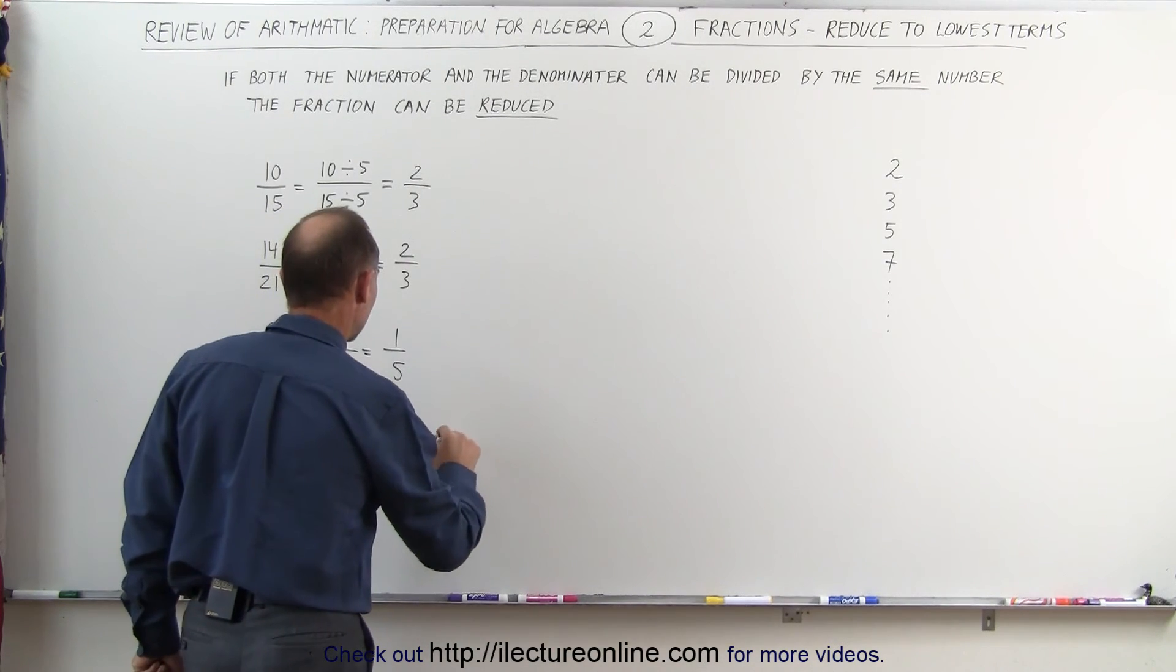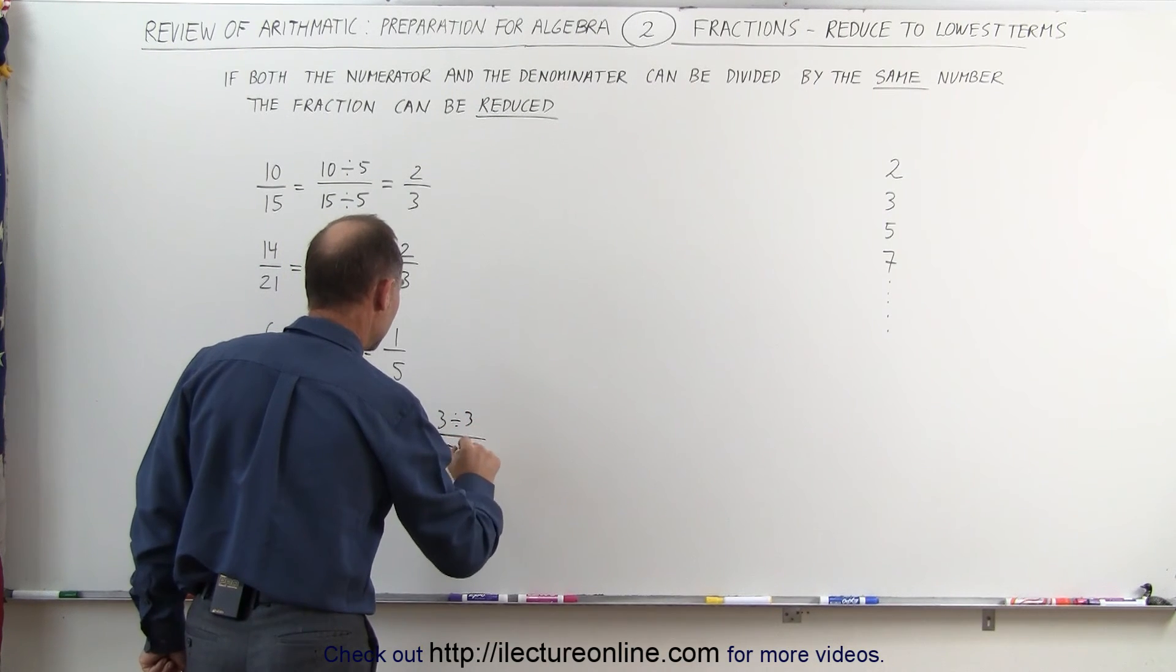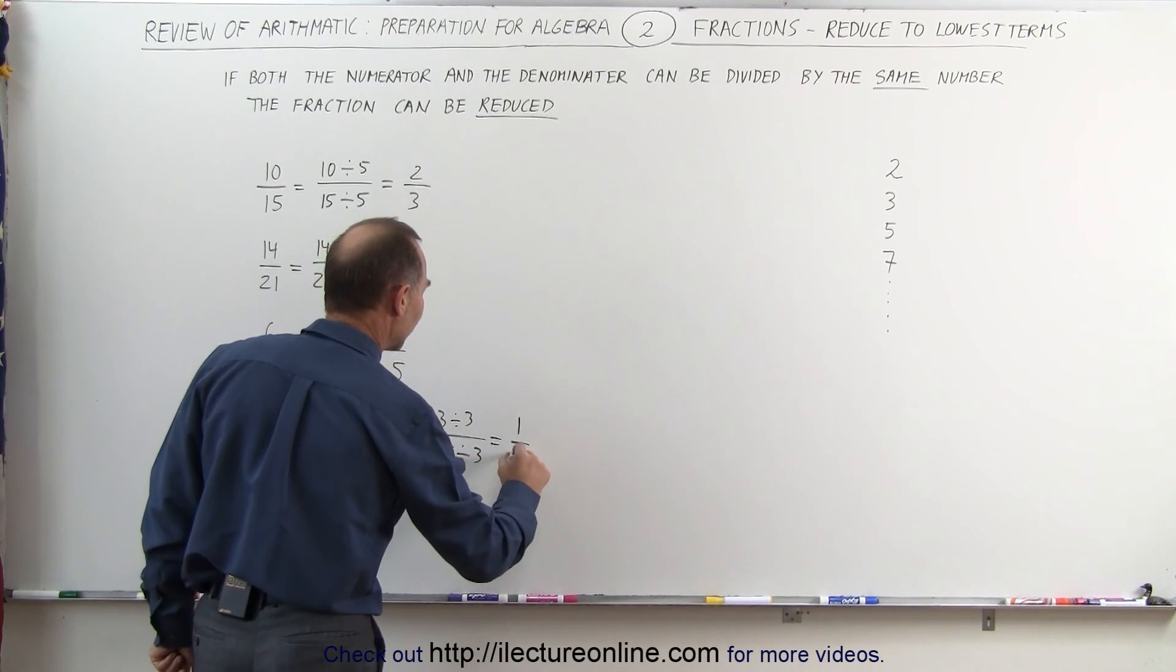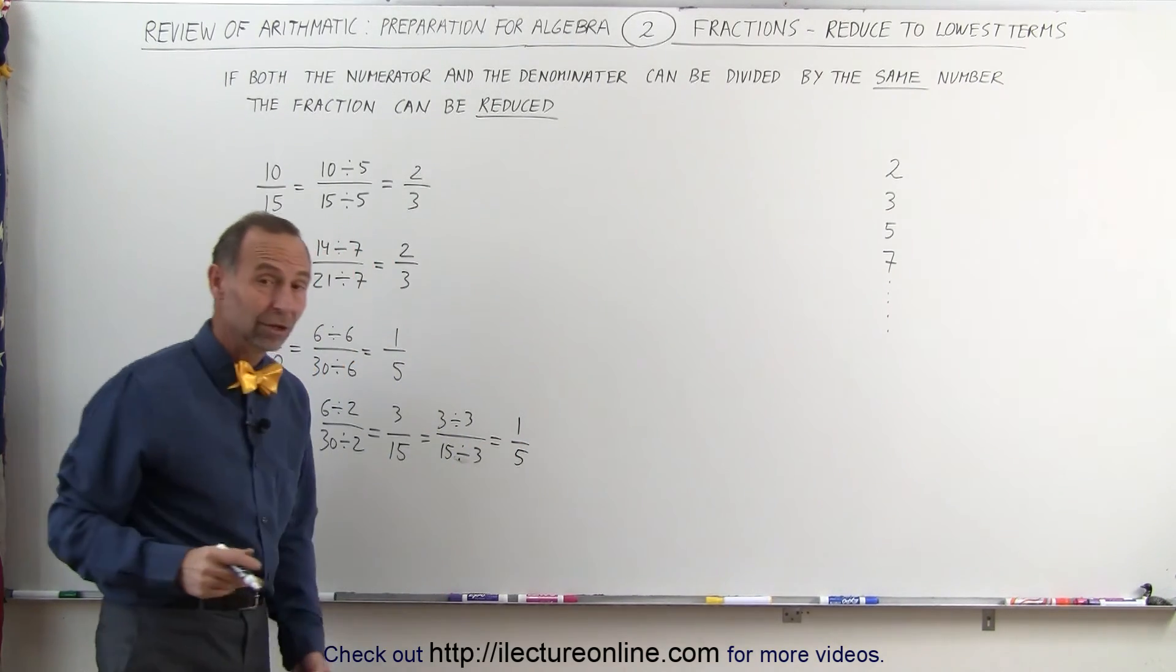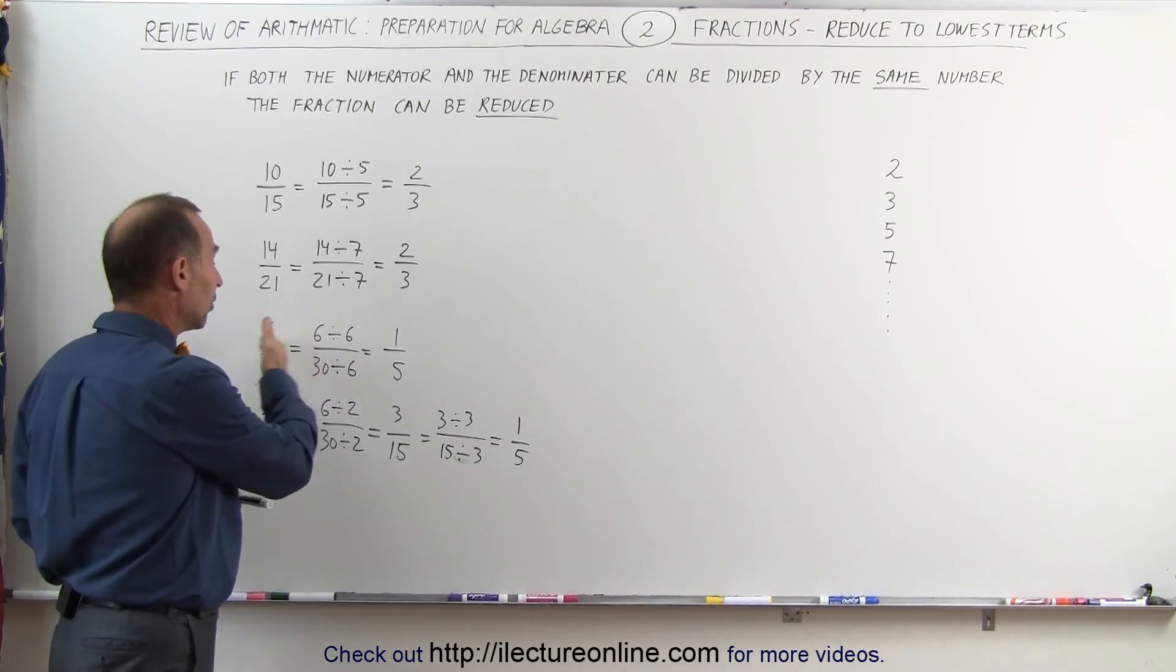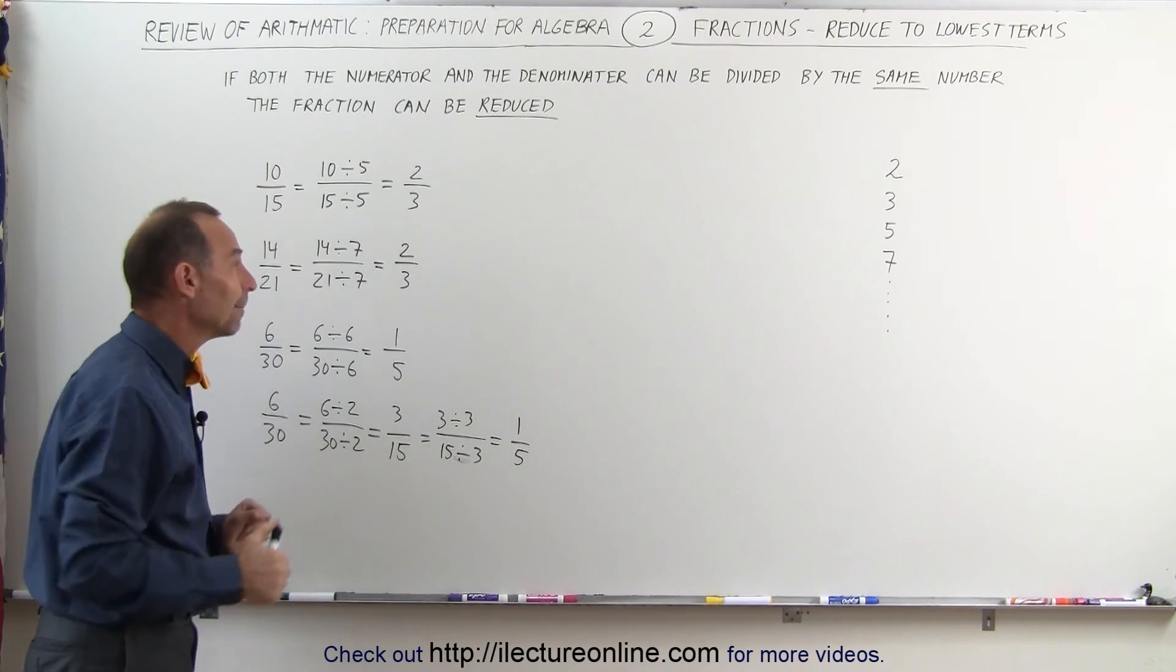This can then be written as 3 divided by 3 and 15 divided by 3. 3 divided by 3 is 1. 15 divided by 3 is 5. And so you get the same answer. You just have to do it in two separate steps. It's preferable that you can see it right away, but if you're not sure, you can always do it one step at a time.